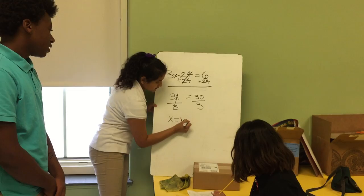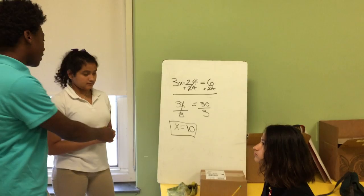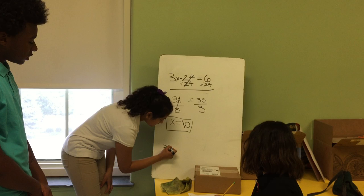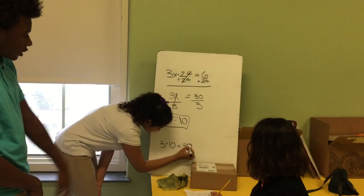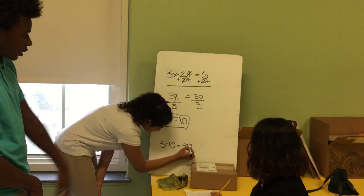Now, this is a short step to check your work. So 3 times 10, and then that equals 30. 30 minus 24, that equals 6. So yes, our answer is correct.